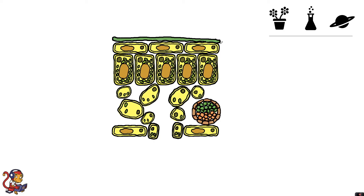This image shows the cross-section of a leaf. If you were to cut a leaf in half so that you have the top of the leaf here and the bottom of the leaf, under a microscope the arrangement of cells would look a little bit like this.